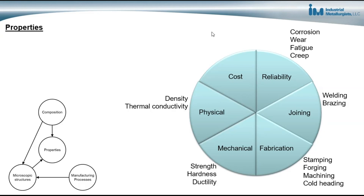Also, reliability, corrosion resistance, wear resistance, fatigue resistance, and creep resistance are important for many applications, as well as cost. And sometimes physical properties are important, like density and thermal conductivity. So when selecting a steel to use for a particular application, we have to consider all of these properties. And we can engineer steels to have many of the different properties that we need for a particular application.